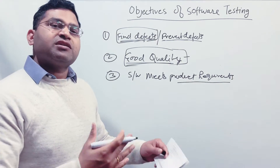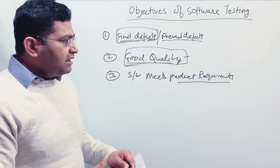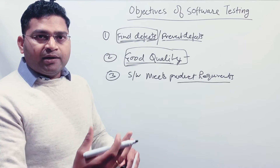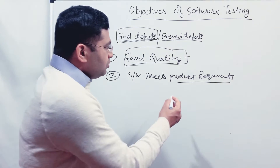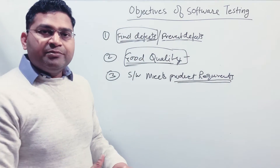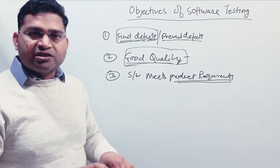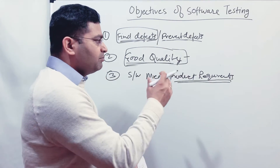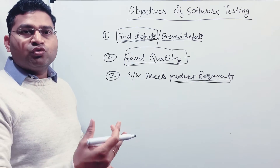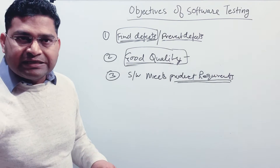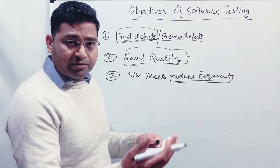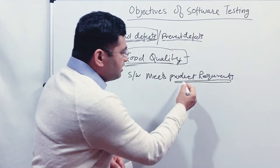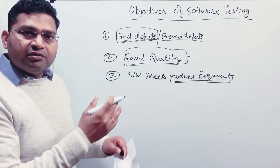Say for example I run a software company and I have taken a project for a bank. The bank wants to implement a web portal to capture the customer's data. They will provide the requirements — for example: the portal should work in Chrome and Firefox as the supported browsers. It should have functionality to register a customer, so there should be a button on the home page. When somebody clicks 'Register', it should open a form to enter details like first name, last name, and whatever details they want. These are some of the requirements in simple scenarios, and when implementing that application these requirements need to be met.